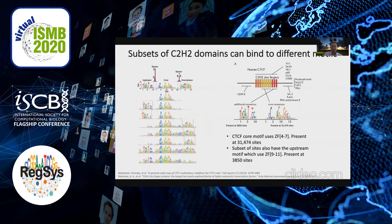This upstream motif is found at a very small set of sites — only about 3,000 sites — and it's bound by fingers 9 to 11. Could it be that this upstream motif is what is getting missed out in all these other C2H2 zinc finger transcription factors?